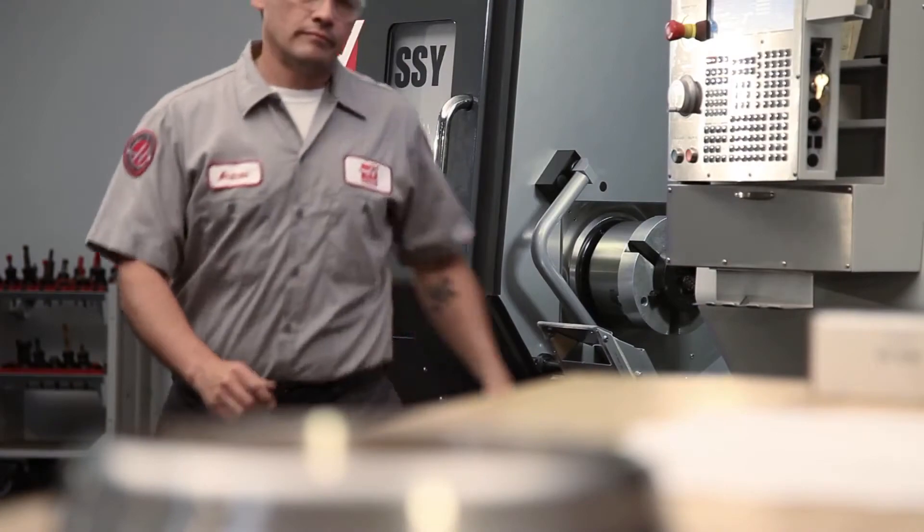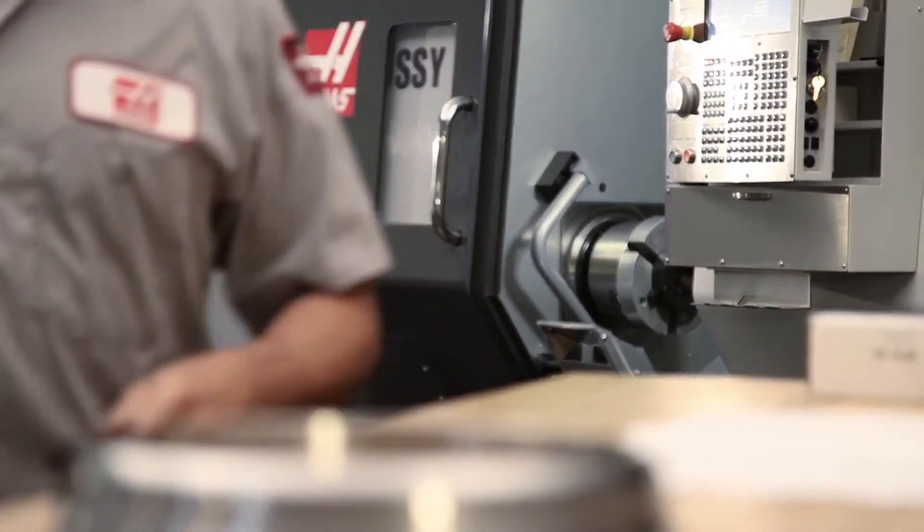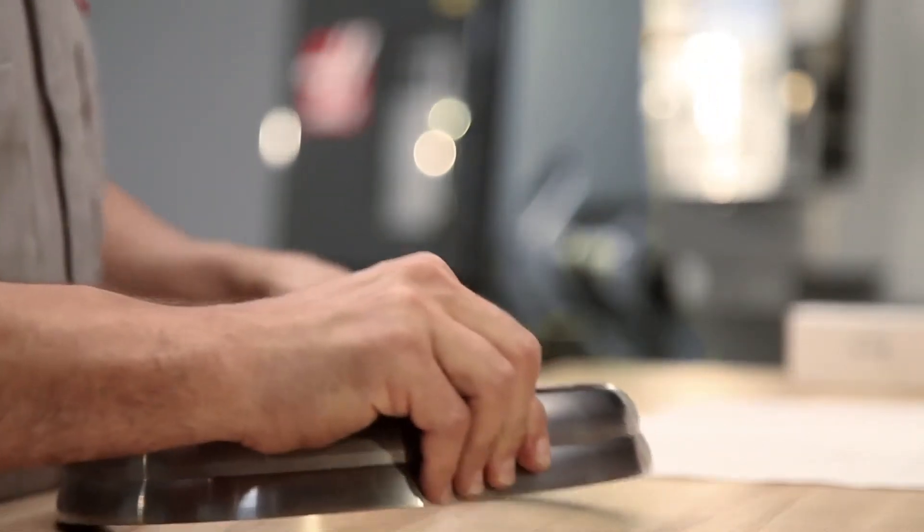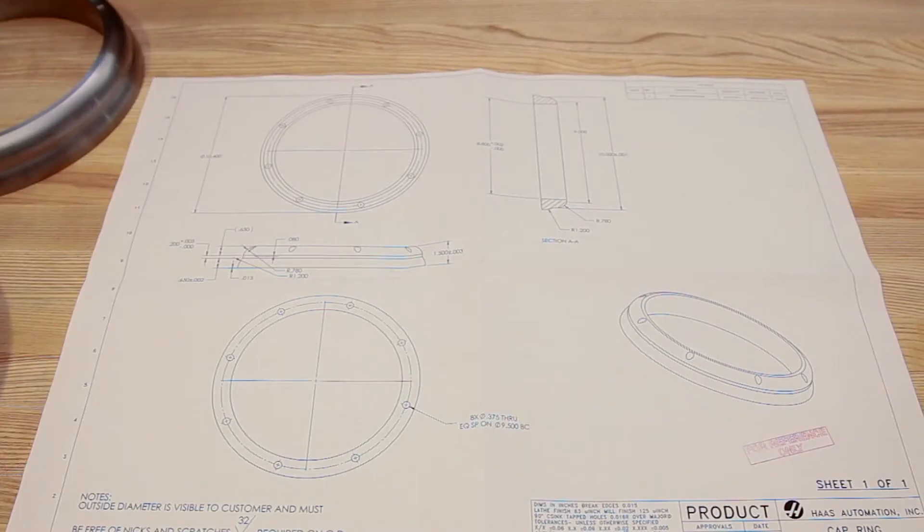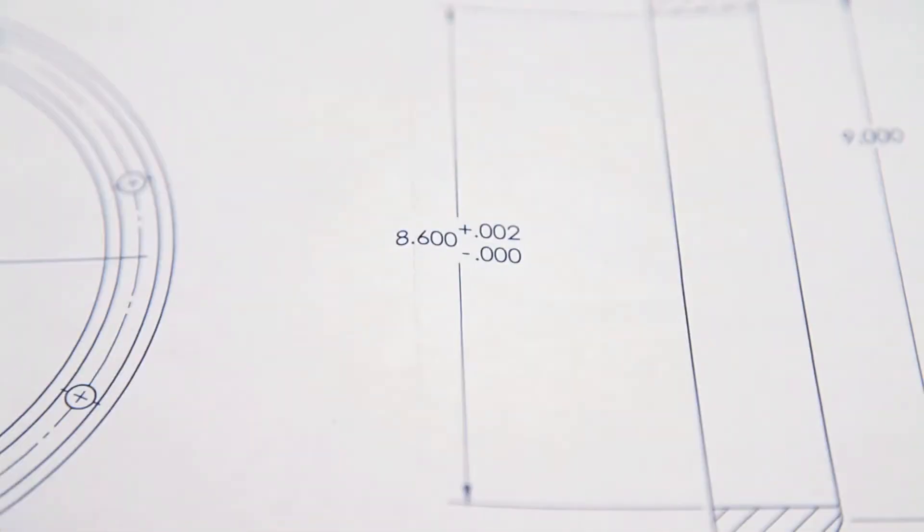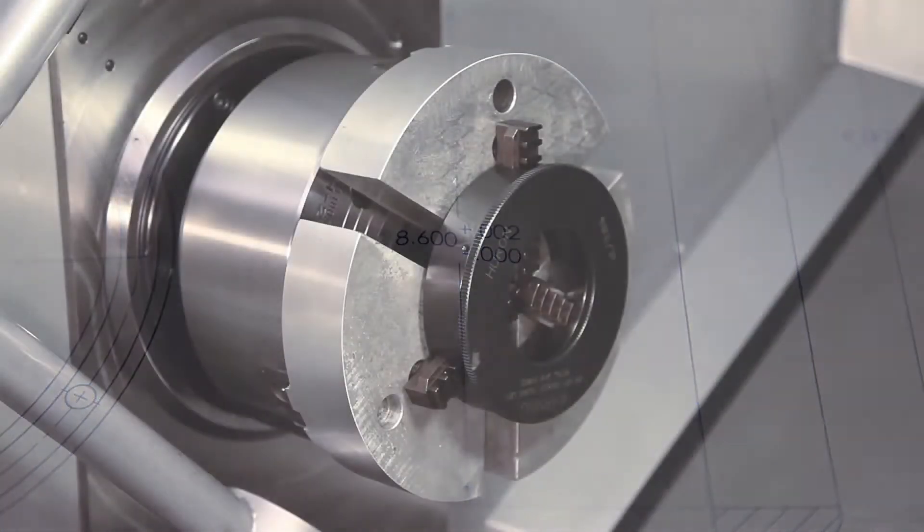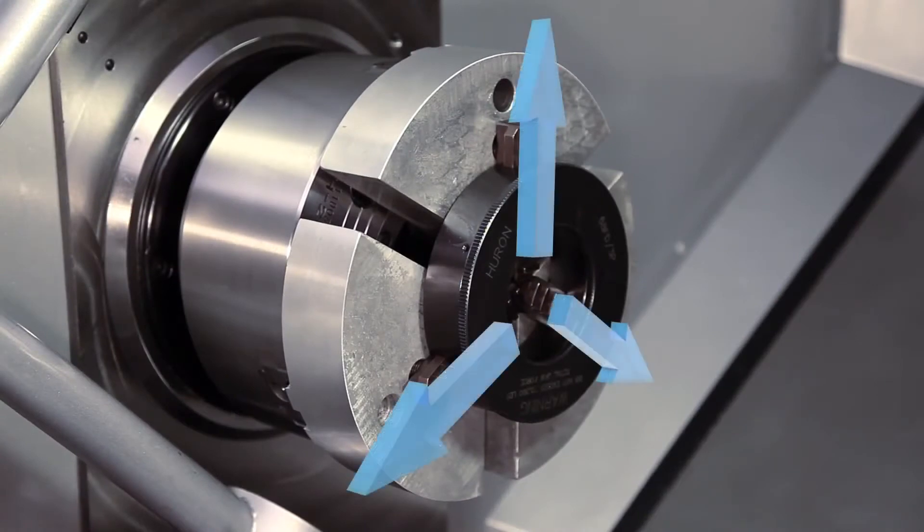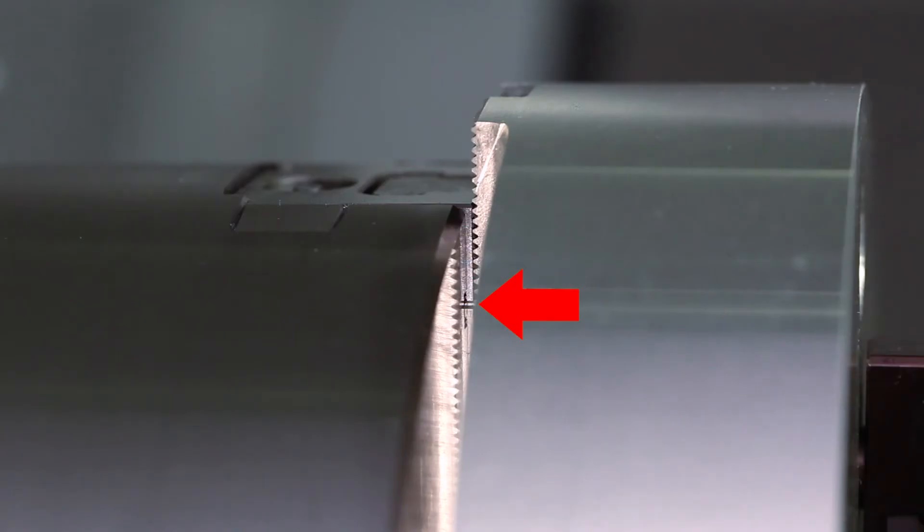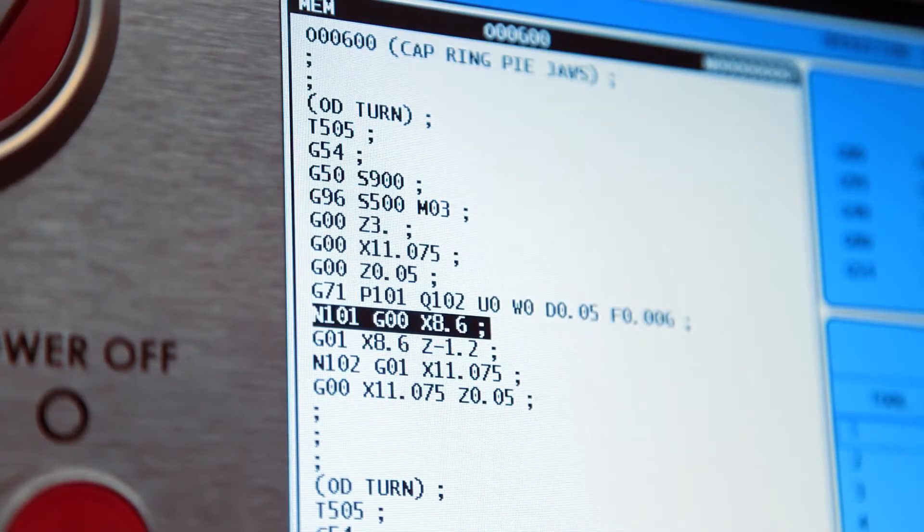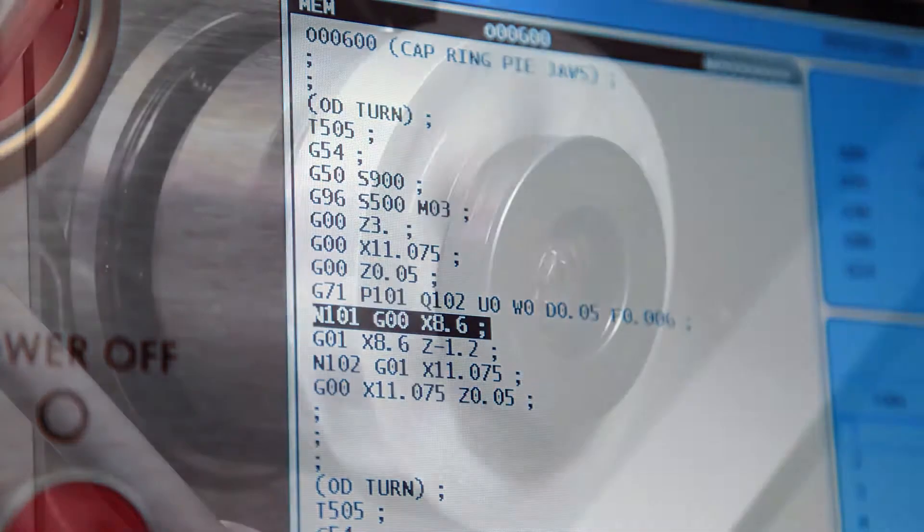Regardless of what kind of ID gripping jaws you are using, jaws holding the inside diameter of the workpiece should always be cut to match the nominal workpiece diameter. With the jaws pushing outward against the boring ring at 100 PSI, the master jaws at mid-stroke, and our program set to cut to the nominal part diameter, these jaws are ready to cut.